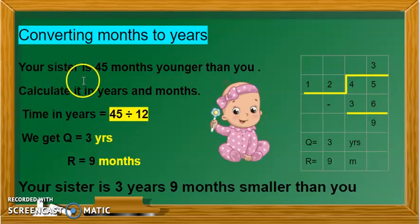So, let us see an interesting story on this also. Now, your sister is 45 months younger than you. Calculate it in years and months. So, 45 divided by 12 again. 12 outside the box and 45 inside. 12 threes are 36. 45 minus 36 is 9. So, 9 is the remainder that is the number of months is 9 and quotient we are getting 3, that is the number of years. So, your sister is 3 years and 9 months smaller than you.